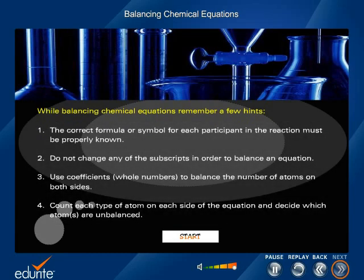The correct formula or symbol for each participant in the reaction must be properly known. Do not change any of the subscripts in order to balance an equation. Use coefficients as whole numbers to balance the number of atoms on both sides. Count each type of atom on each side of the equation and decide which atoms are unbalanced.